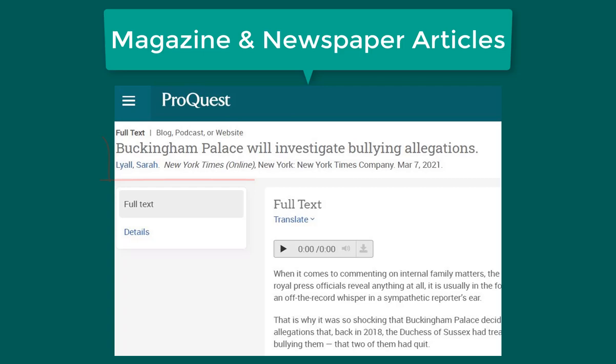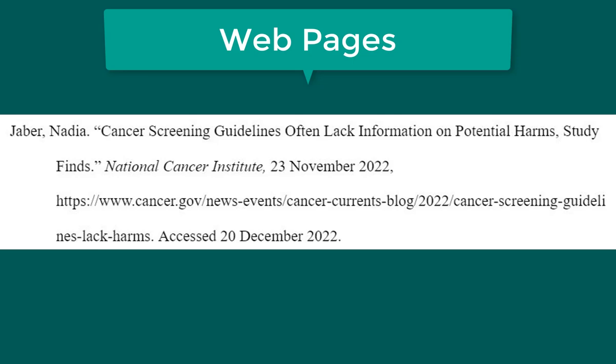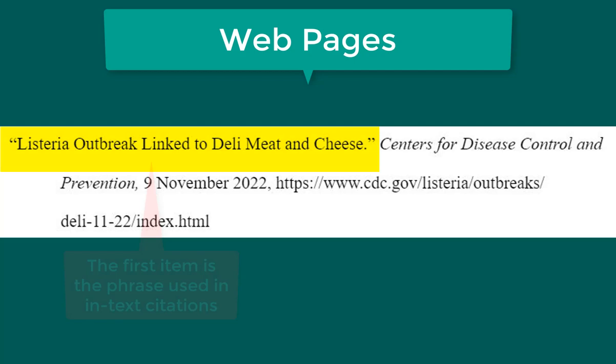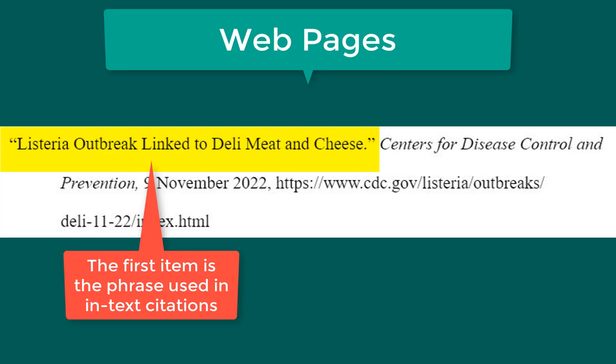The format for citing a web page is the author's name and then the title in quotation marks. Then include the name of the website in italics, the publication date if available, comma, the URL, period, and the date that you accessed the website if applicable. If there is no author, begin the citation with the title. Put the title in quotation marks if it's a short work such as an article, or italicize it if it's a longer work such as a play, book, or TV show. For more details on creating citations, see the list of resources in the video description. Please don't hesitate to contact the library for additional assistance.